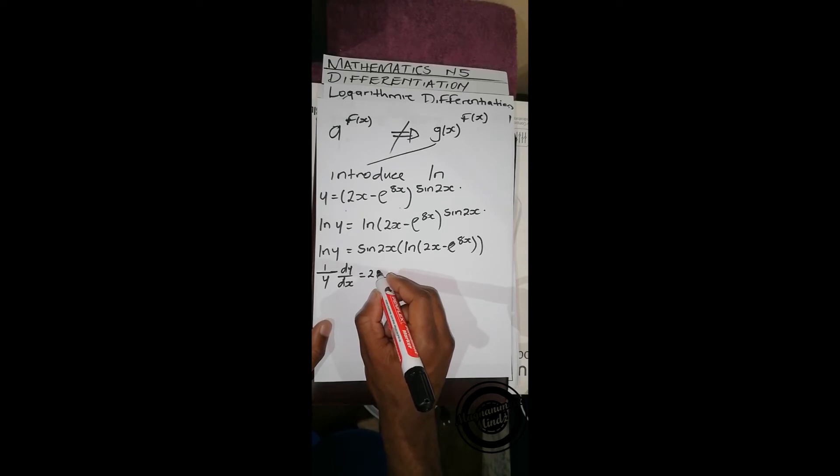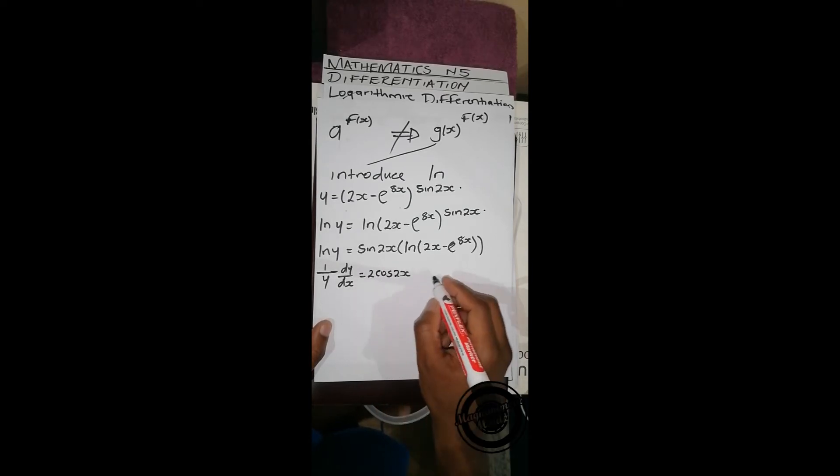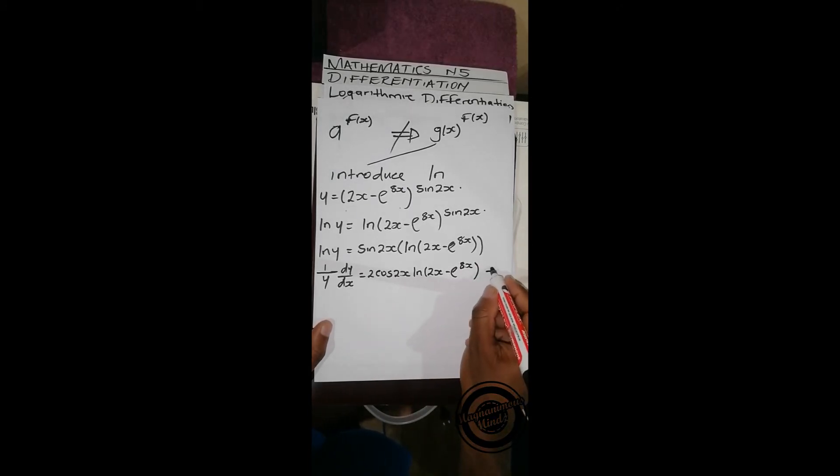Then we'll get 2cos(2x) times ln(2x - e^(8x)), plus